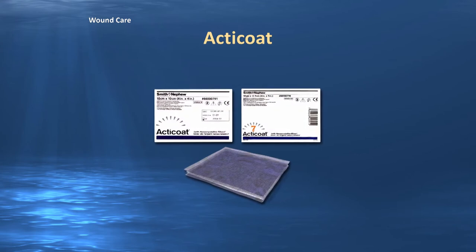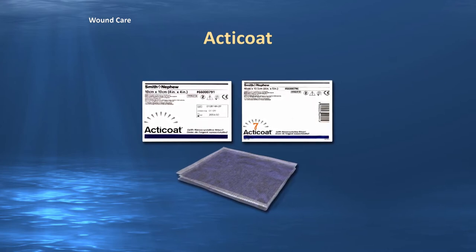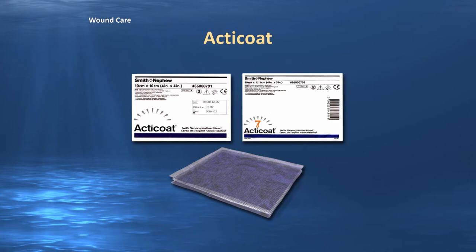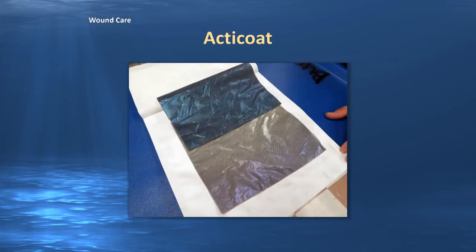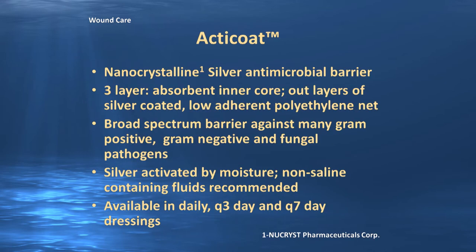ActiCoat is one of the newer silver nanotechnology products on the market for burn and wound care. It is a silver-impregnated gauze containing silver nanocrystals, three-layered with a silver side and a blue side — both sides contain silver crystals activated by immersion in sterile water. You want to moisten it, not soak it, then lay it on the wound and moisten the outside of the dressing every four to six hours to keep the silver releasing. It comes in daily change, three-day change, or seven-day change formats.